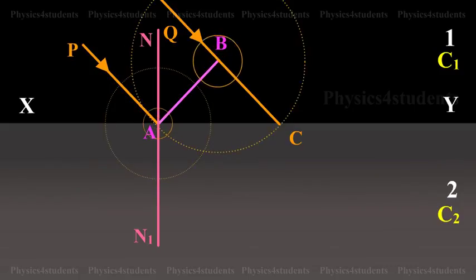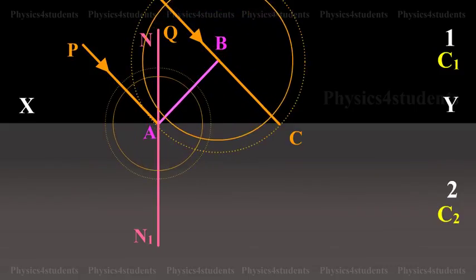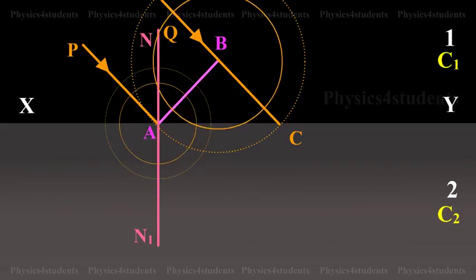According to Huygens' principle, each point on the wavefront acts as a source of secondary wavelets.